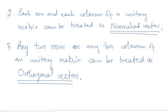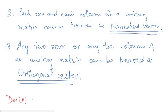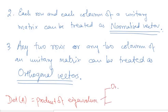Recall from eigenvalue theory that the determinant of any matrix A equals the product of its eigenvalues. For an orthogonal matrix the determinant is ±1, so the product of its eigenvalues is always ±1. For a unitary matrix the determinant has unit modulus, so the eigenvalues of a unitary matrix also have unit modulus.